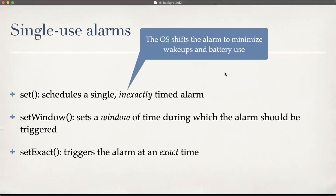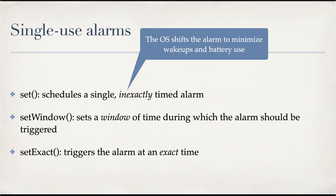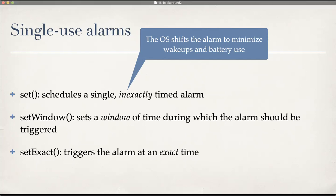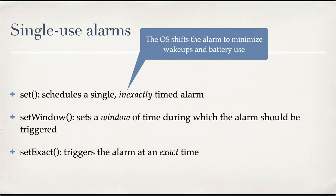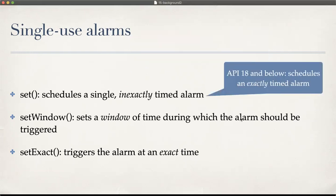For an inexactly timed alarm, the OS shifts the alarm to minimize wake-ups and battery use. If there are other alarms scheduled around the same time, the OS can group them together and fire them together so the device doesn't wake up for each one individually. setWindow() gives similar flexibility but with less openness. The set() method has been there since API level 1, but in API 19 its behavior was changed so that set() is always inexactly timed. For API 18 and below, set() does an exactly timed alarm. setWindow() and setExact() were introduced in API 19.